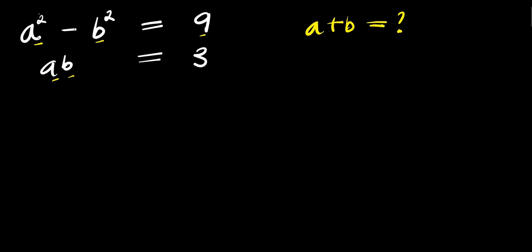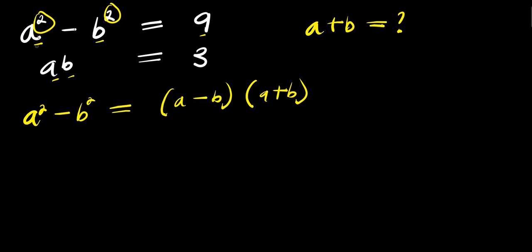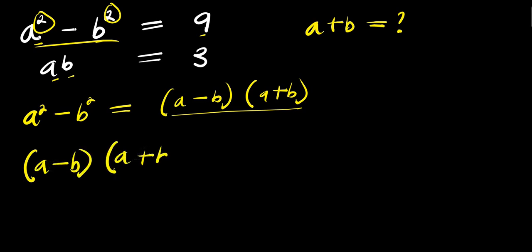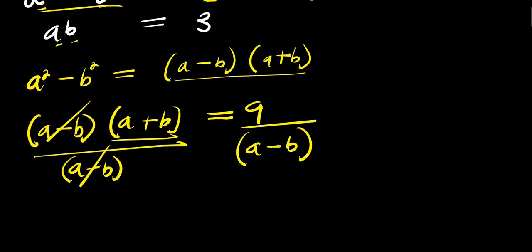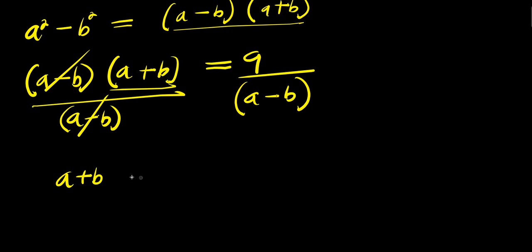Now what we can do — we also have this difference of two squares, so we apply the formula for difference of two squares. That is, if you have a squared minus b squared, this equals a minus b times a plus b. So we replace this with a minus b times a plus b, giving us: a minus b times a plus b equals 9.